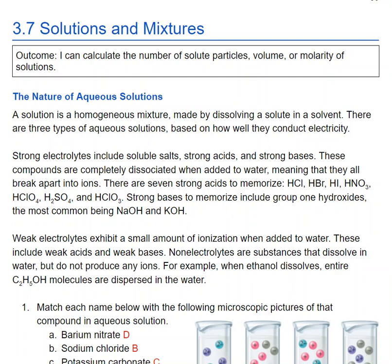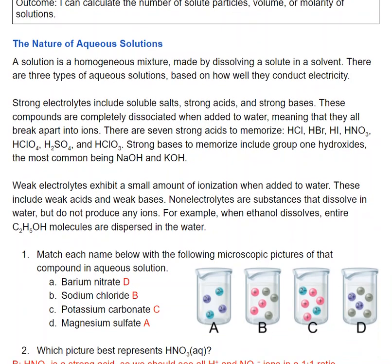A solution is a homogeneous mixture made by dissolving a solute in a solvent. There are three types of aqueous solutions based on how well they conduct electricity.